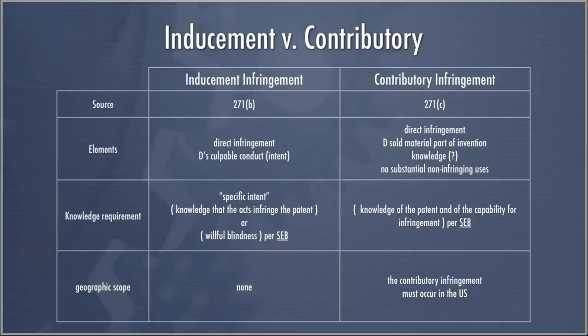Here's a chart that sets out how to think about the differences between inducement and contributory infringement. Inducement infringement is 271(b), contributory is 271(c). The elements for inducement are direct infringement and some culpable conduct — specifically, intent that your end users engage in the infringement, plus a knowledge requirement and specific intent that the acts infringe the patent. Under SEB v. Global Tech, a Supreme Court case, this knowledge requirement for inducement can be found by willful blindness.